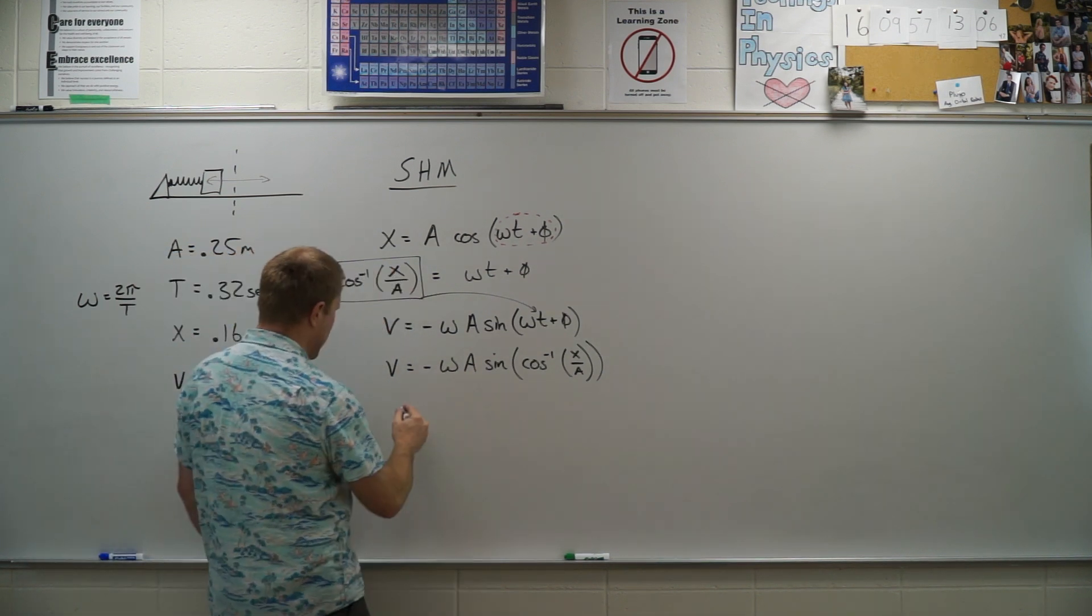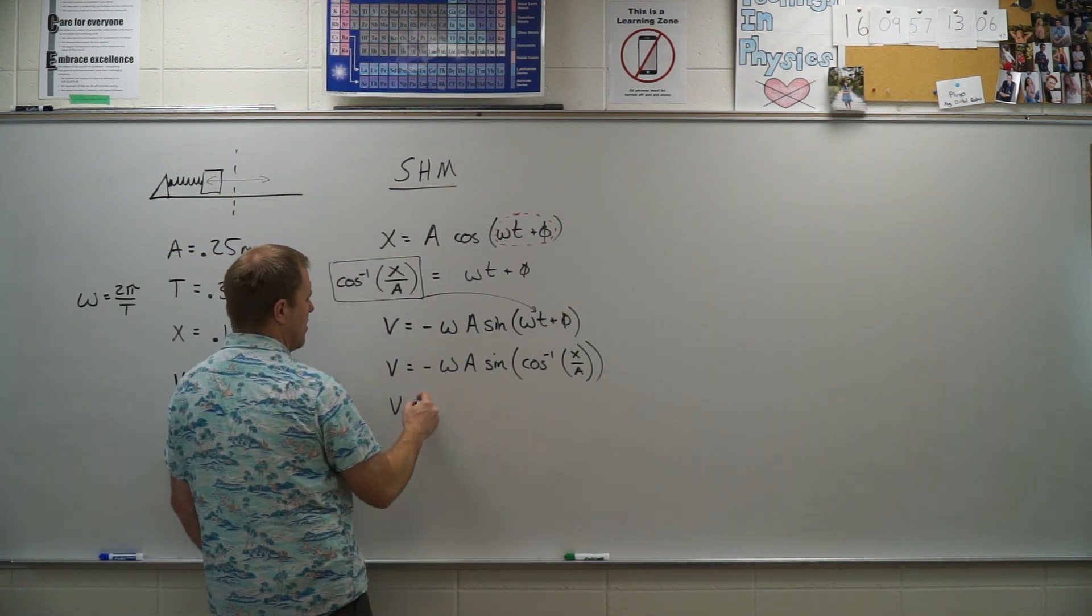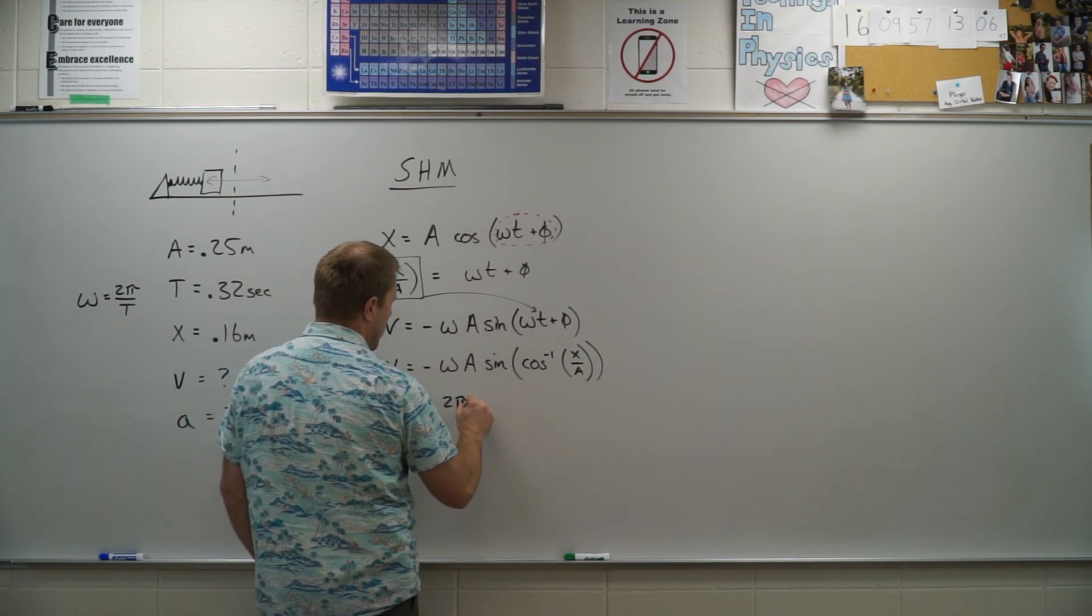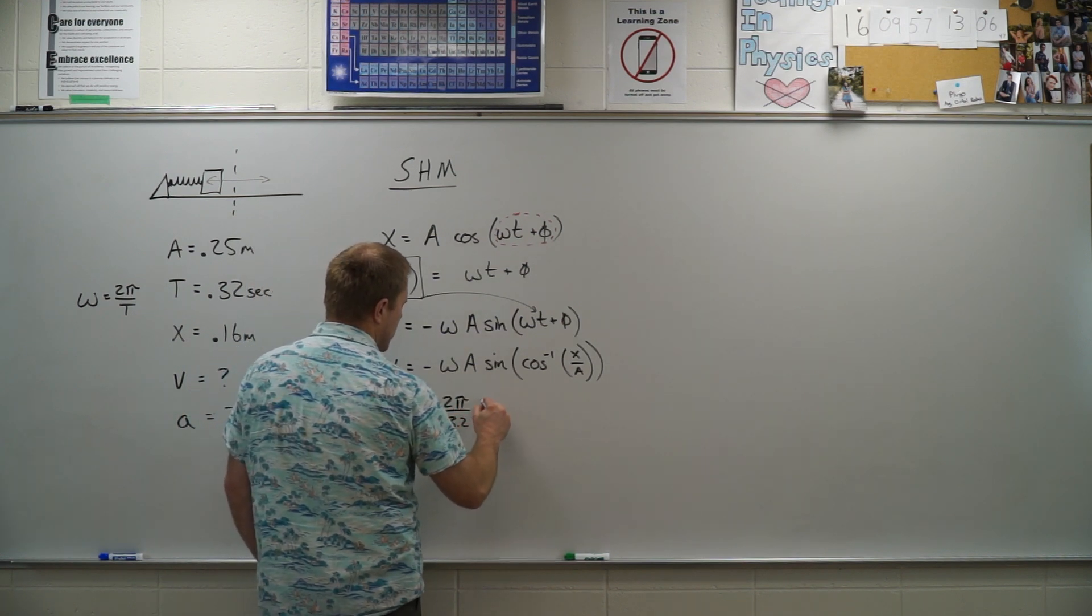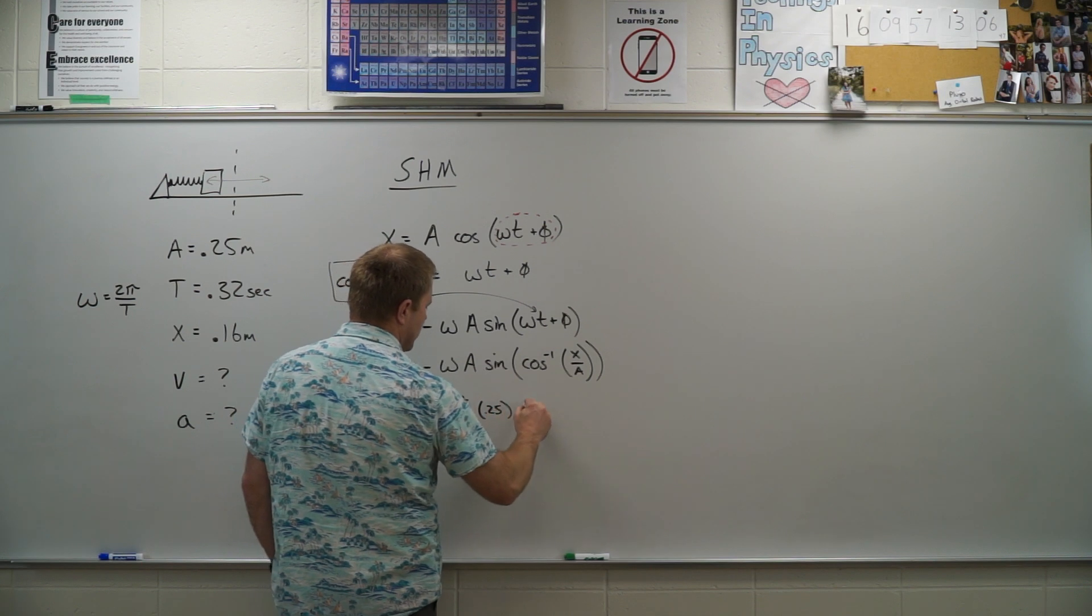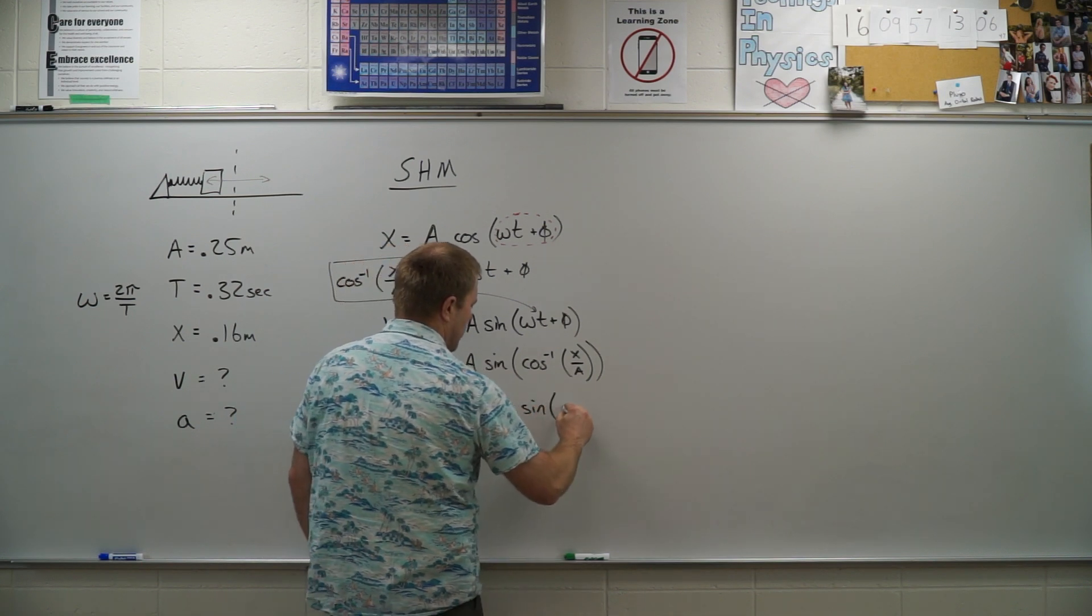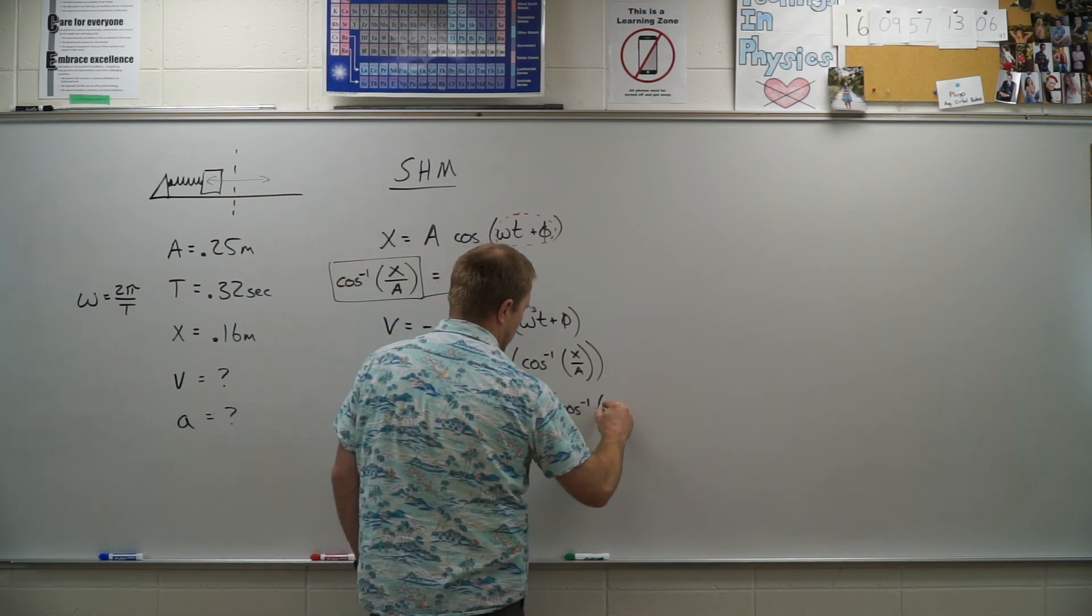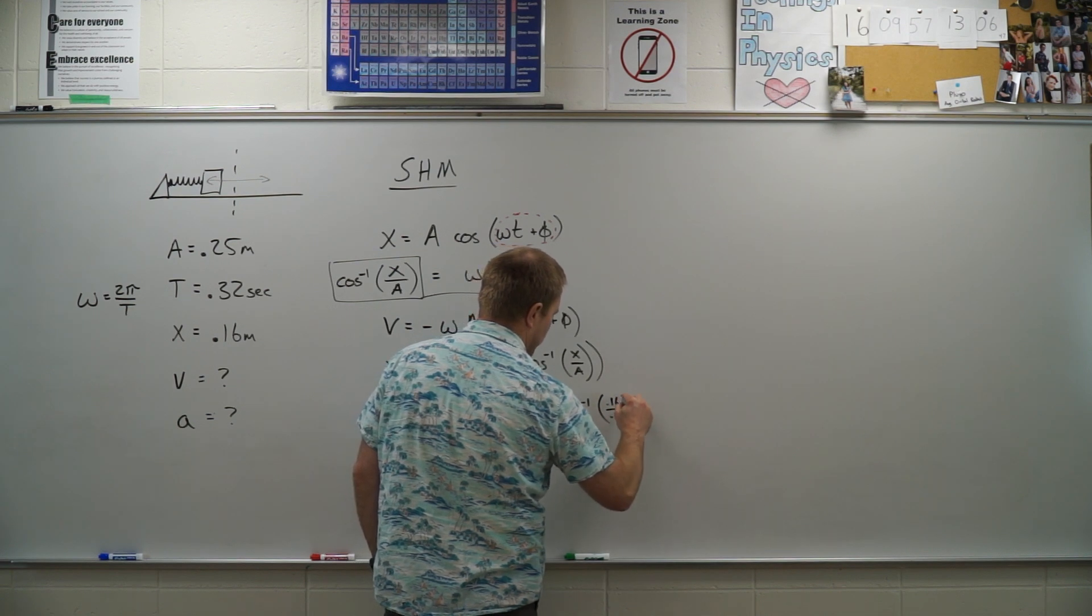So let's go ahead and type all that in. And since it's speed, I don't really need the negative sign, but I'm going to include it. So 2 pi divided by 3.2 times my 0.25 times the sine of the inverse cosine of 0.16 divided by 0.25.